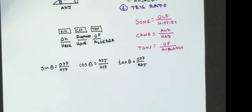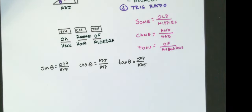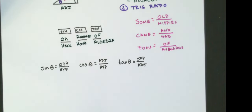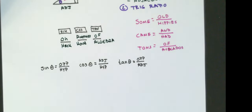We're going to start out using these to find side lengths. In the next lecture on solving right triangles, we'll figure out inverse trig ratios, which will give us angle measurements. Let me go to IXL.